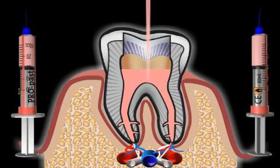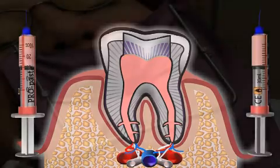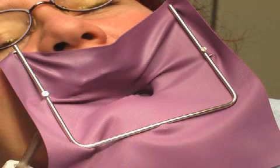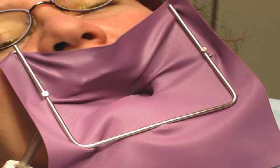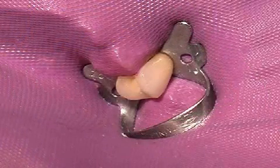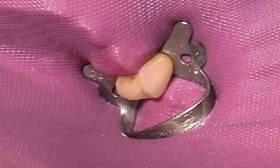Absolute cleanliness and a sterile working environment are a prerequisite for any root canal treatment. In order to facilitate this in the mouth, it's imperative that the dentist works with a cofferdam, because this is the only way to prevent saliva from reaching the interior of the tooth. Saliva contains many different bacteria that can endanger the success of a root canal treatment.